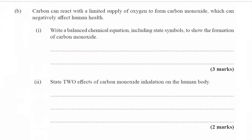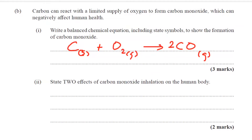Part B. Carbon can react with a limited supply of oxygen to form carbon monoxide, which can negatively affect human health. Write a balanced chemical equation including state symbols to show the formation of carbon monoxide. So this is carbon solid burning in oxygen, but limited supply, giving us carbon monoxide CO, which is a gas. We have two oxygen on the left, so we put a two in front of the CO to balance the oxygens, then put a two in front of the carbon — and we're fine.